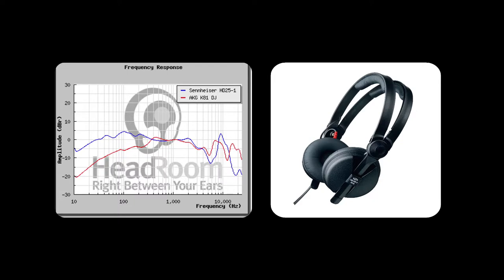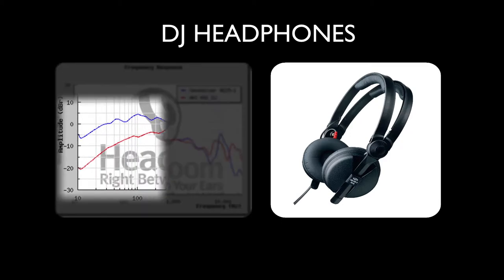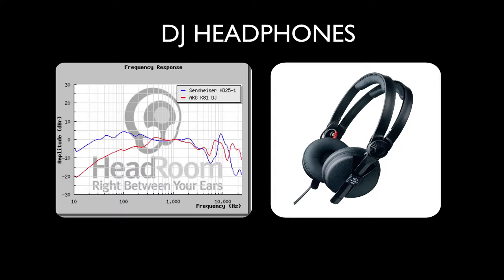The second issue with headphones is how well they're able to replicate the frequency spectrum. As you can see here, we've got the frequency response graph of the Sennheiser HD25s compared to the AKG K81 DJ headphones. I actually have a set of HD25s and have used them occasionally for bass monitoring because, as you can see, they still hold up quite well at the low end. As for the AKG K81s, they start to dip at about 100Hz, and although it is quite a natural dip, you're going to find yourself boosting the subs and bass to make up for the fact that your headphones can't replicate those low-end frequencies.